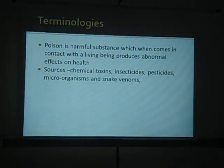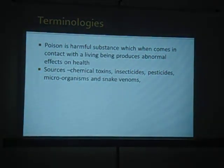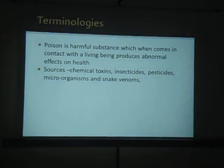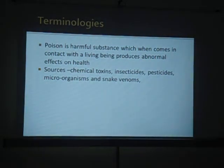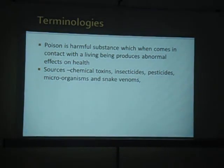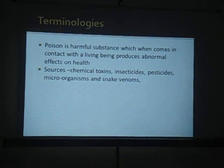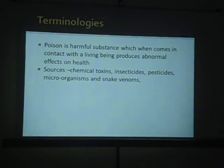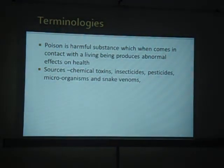So what are the sources of poisoning? It can be chemical toxins, insecticides, pesticides. Agricultural people - if they are not getting a good crop, they get depressed and they consume pesticides or insecticides. That is what is commonly seen.